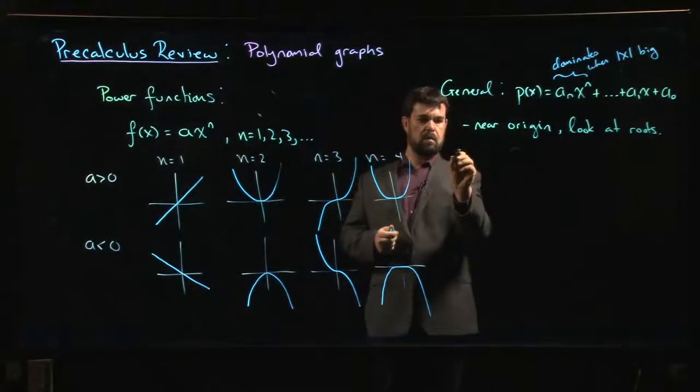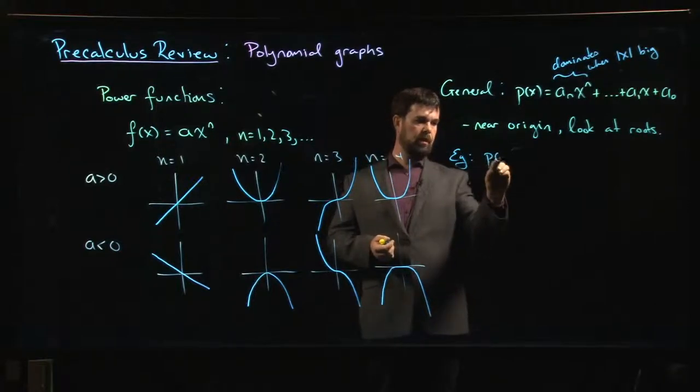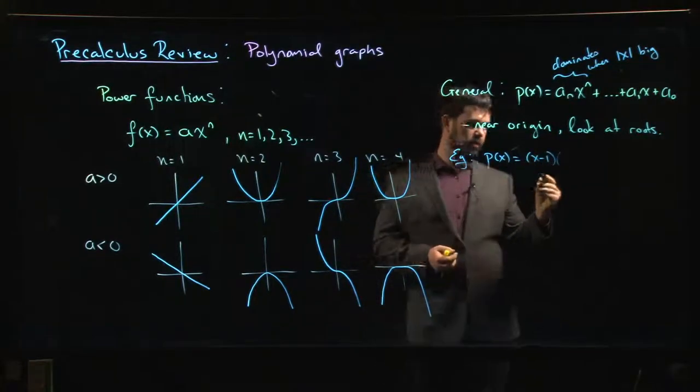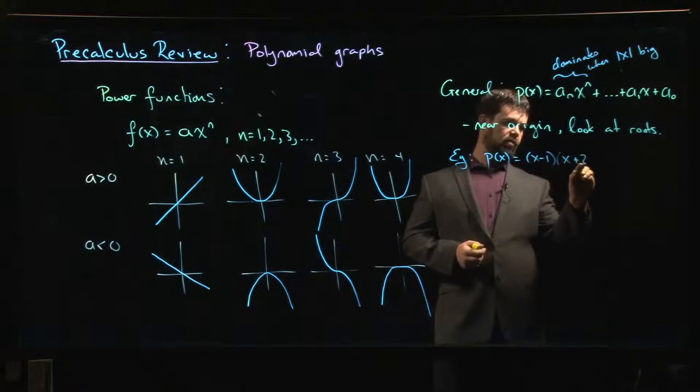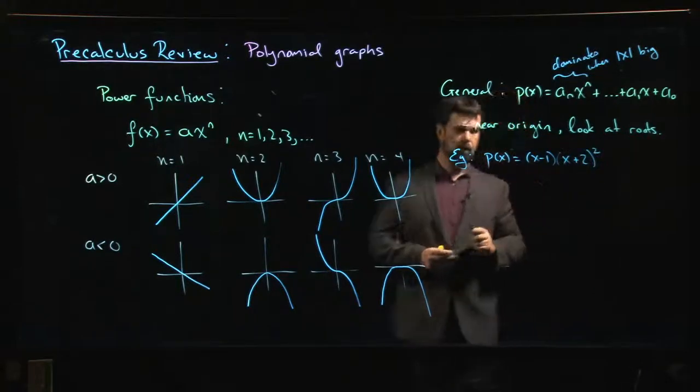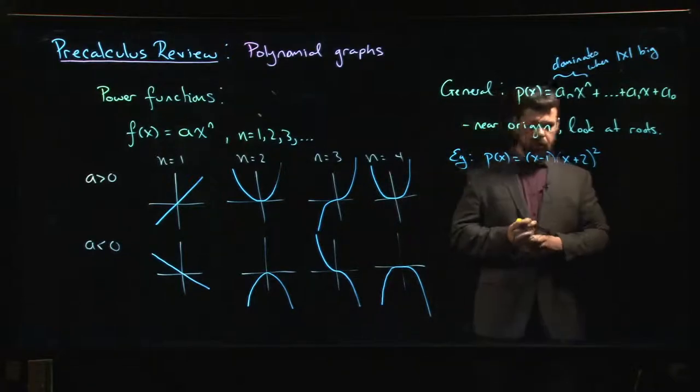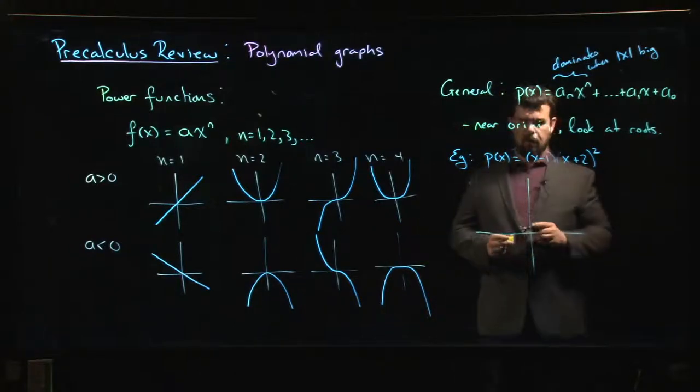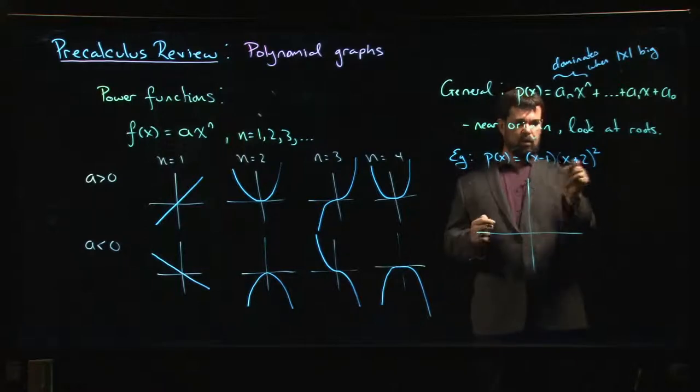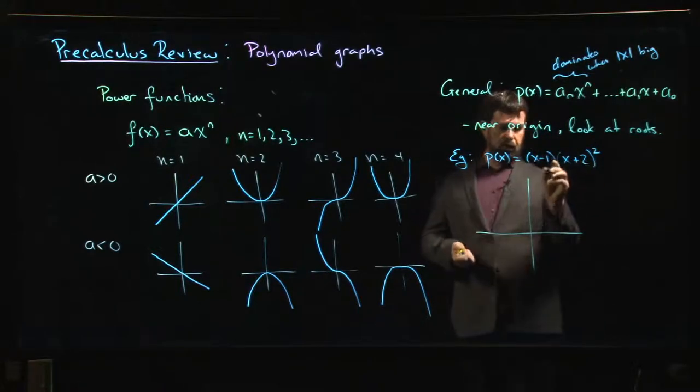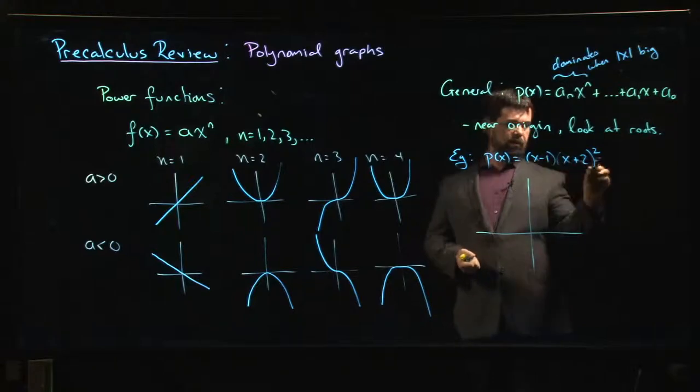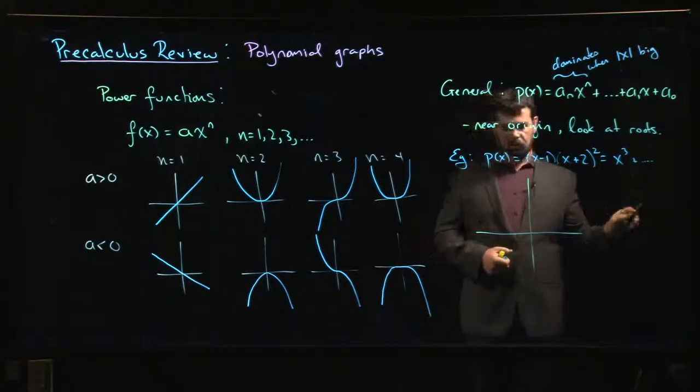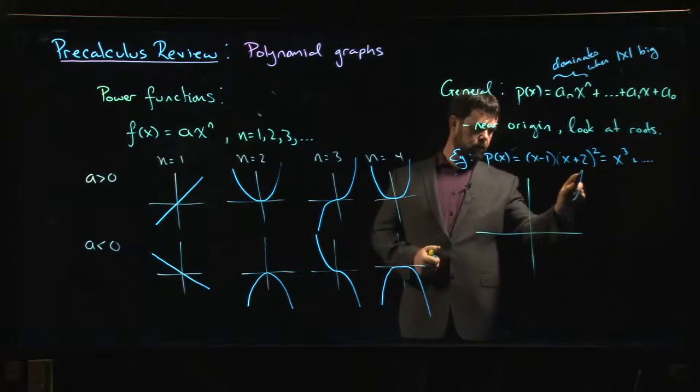As an example, let's say we have a polynomial and I'm going to factor it for you. Let's say we have something that looks like (x minus 1) times (x plus 2) squared. That's our polynomial. What is that going to look like? Well, let's draw some axes. So first of all we know that if we were to multiply this all out, and we don't have to multiply everything out, but we can see without doing all the work that the leading term, there's going to be x squared here times x, so the leading term is going to be x cubed.